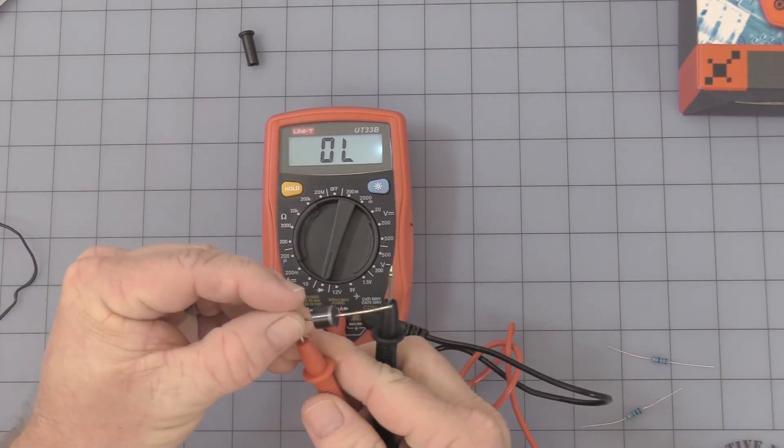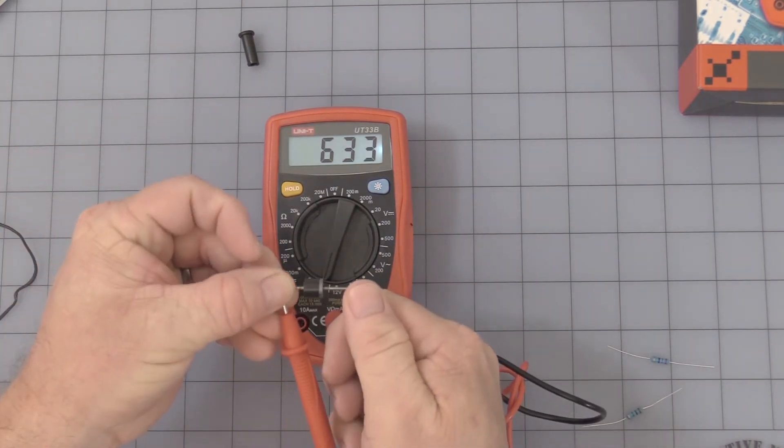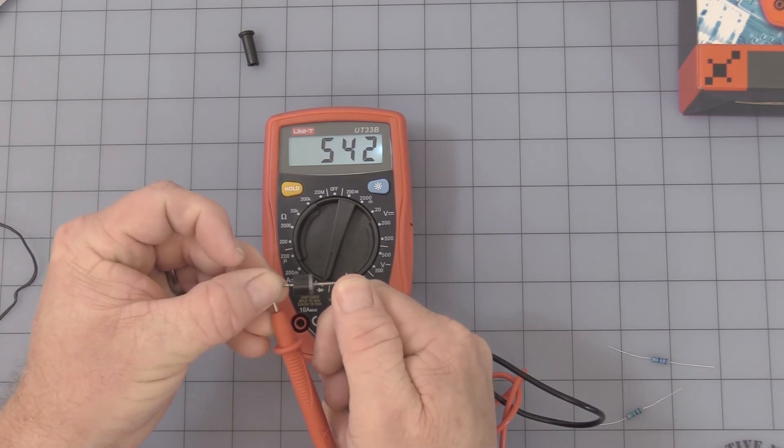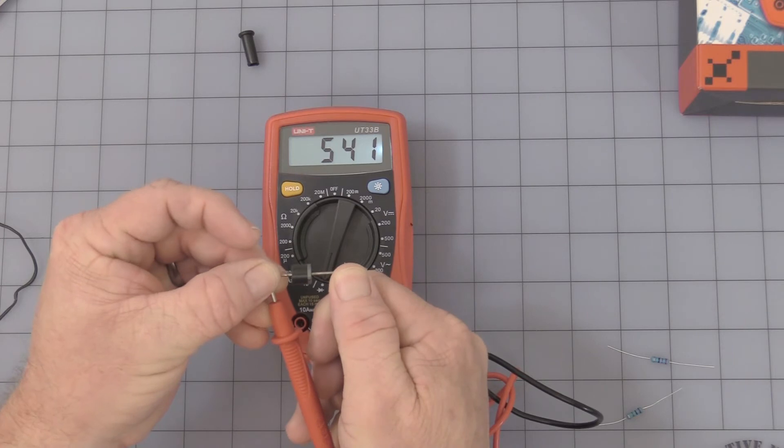So use your tester. You can see the diode tests good. Anything between 0.5 and 0.8 for a silicon diode is standard.